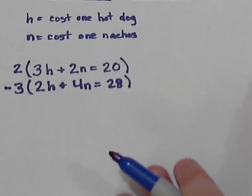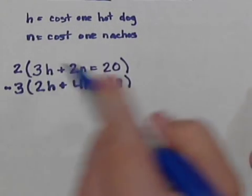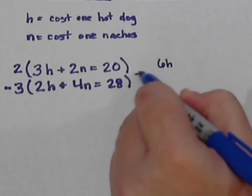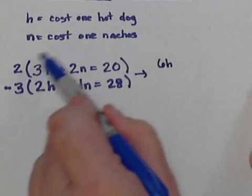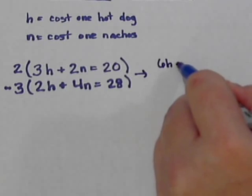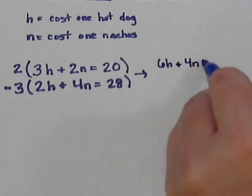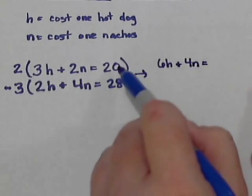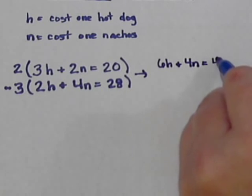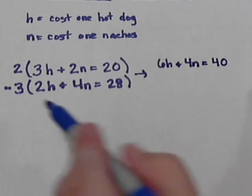If we multiply this out, two times 3h gives me 6h. Two times 2n, that's going to give me 4n. And then two times twenty, that's going to give me forty.